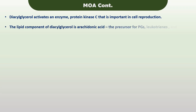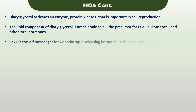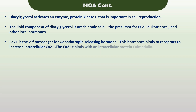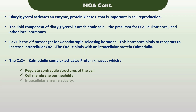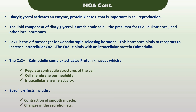Calcium is the secondary messenger for gonadotropin-releasing hormone. This hormone binds to receptors to increase intracellular calcium, and the calcium binds to an intracellular protein called calmodulin. The calcium-calmodulin complex activates protein kinases, which regulate various functions including the contractile structure of the cell, cell membrane permeability, intracellular enzyme activity, and specific effects such as contraction of smooth muscle and changes in secretions.